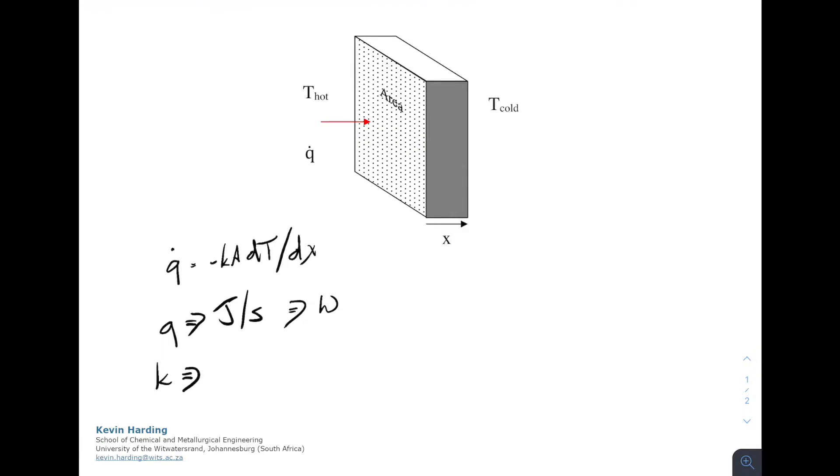K is the thermal conductivity, with units of watts per meter Kelvin. The area A is the area perpendicular to the flow of heat in meters squared. T is the temperature difference from T hot to T cold in kelvins, and X is the thickness of the slab in meters.